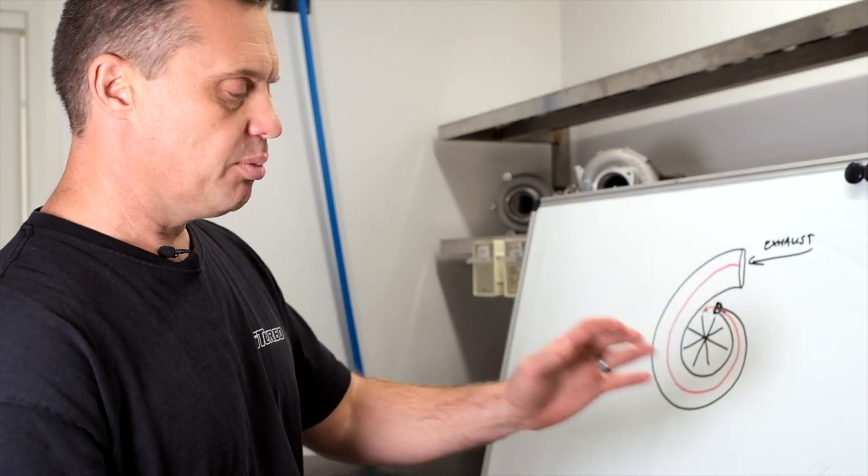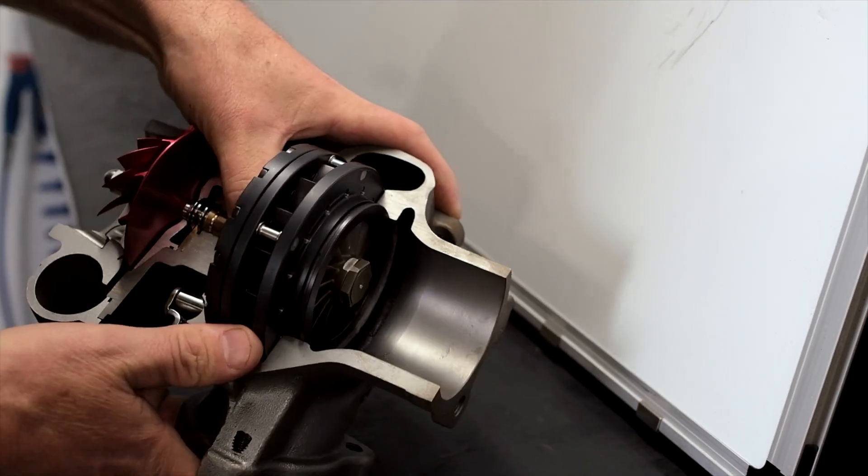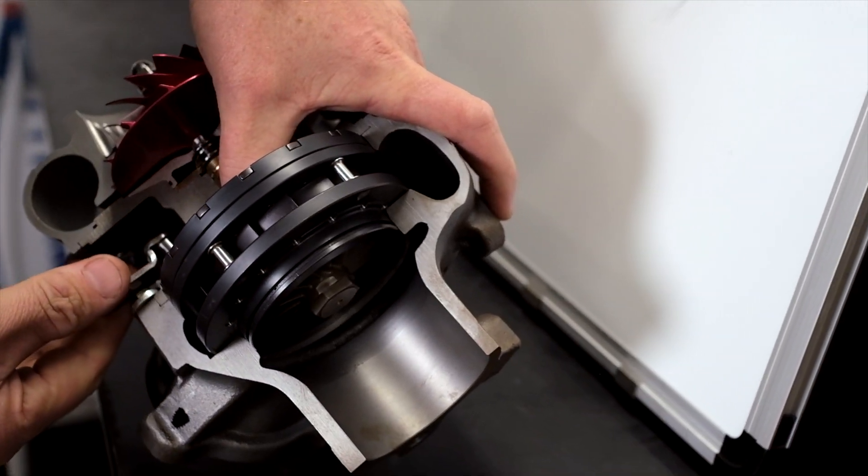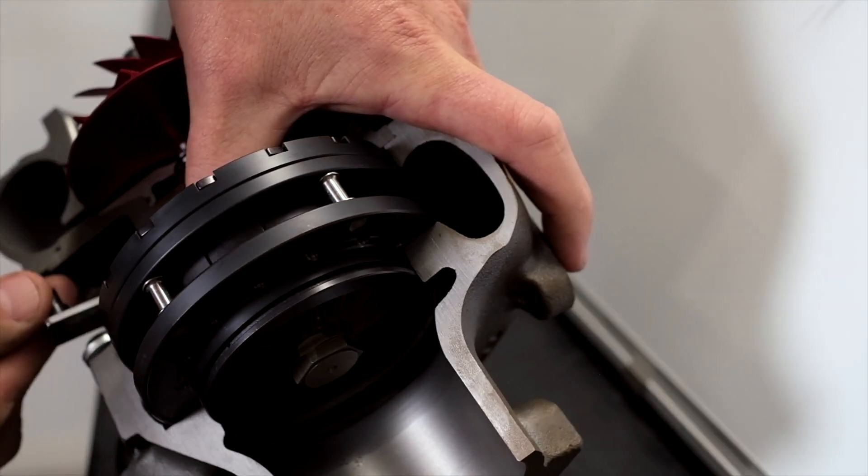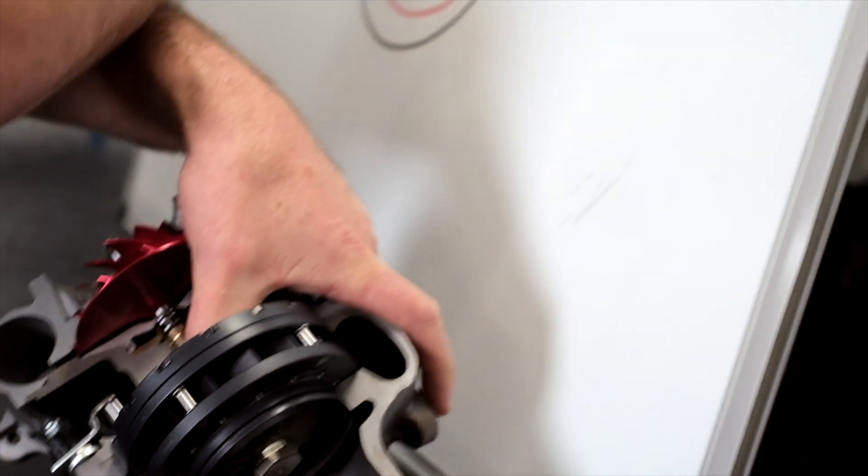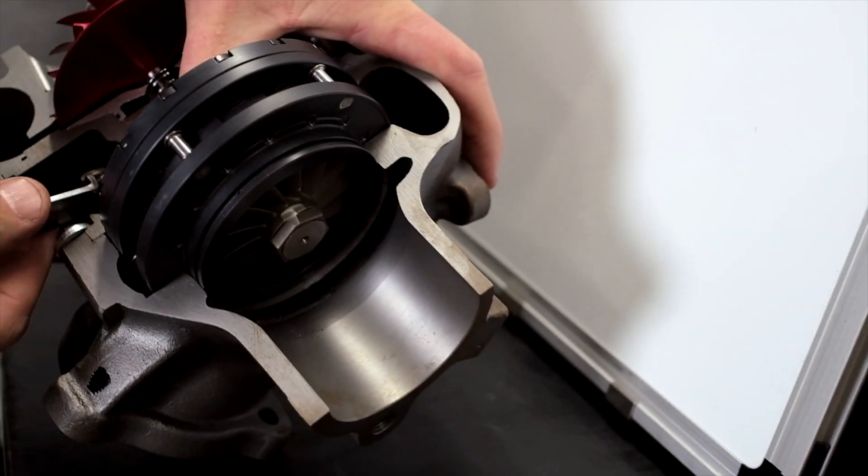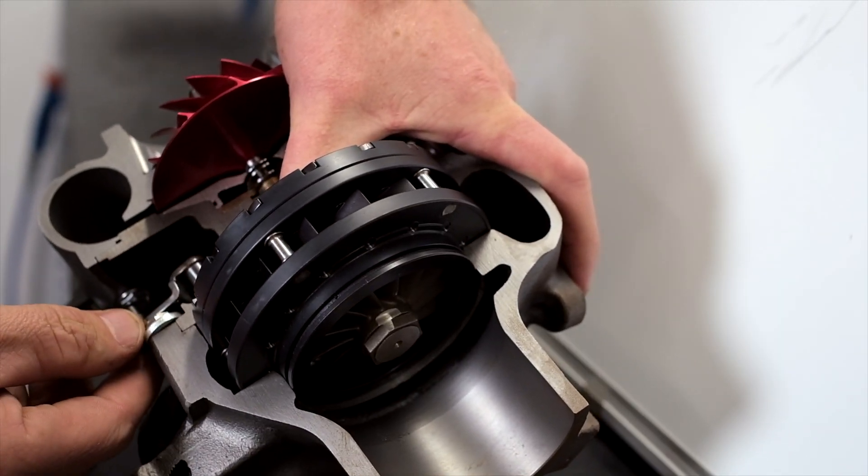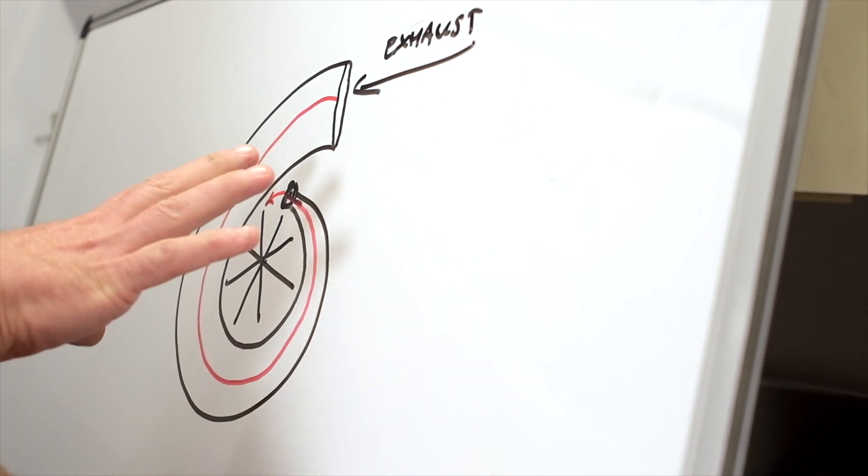With variable geometry housing, you have these vanes which can change the cross-sectional area through here. So each one of those added together forms this cross-section here. In essence, we can make it typically around twice as big as what the wastegated cousin is.